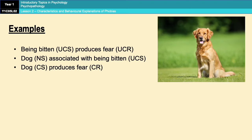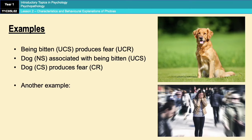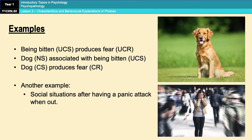Another example could be social situations. Imagine you go into a social situation and have a panic attack. Panic attacks are terrifying — you feel like you can't breathe. So the social situation, which was previously neutral, becomes associated with the fear experienced during that panic attack. The social situation becomes a conditioned stimulus which produces a conditioned response of fear.